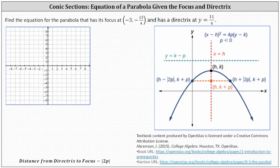We're asked to find the equation for the parabola that has its focus at negative 3 comma negative 13 fourths and has a directrix at y equals 11 fourths. Let's go ahead and plot the focus at negative 3 comma negative 13 fourths. Negative 13 fourths equals negative 3.25, and therefore the focus is approximately here. The directrix is a horizontal line y equals 11 fourths. 11 fourths equals 2.75, and the directrix is approximately here.